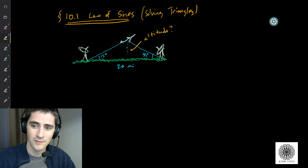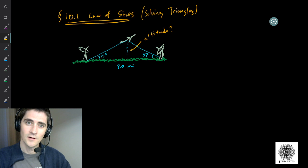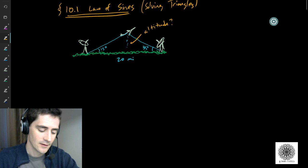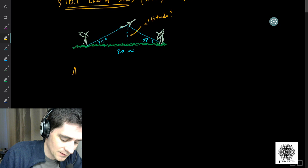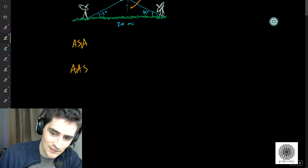But this is not a right triangle — so what do we do? There are different techniques to solving non-right triangles. I'm going to show you three cases that all use the same technique. Today we're looking at ASA, AAS, and SSA.